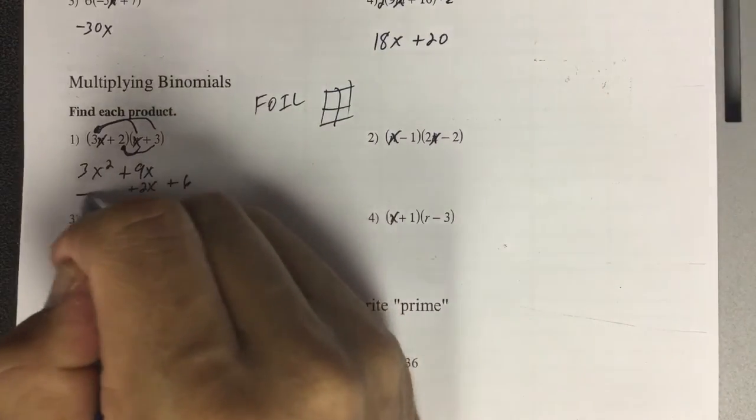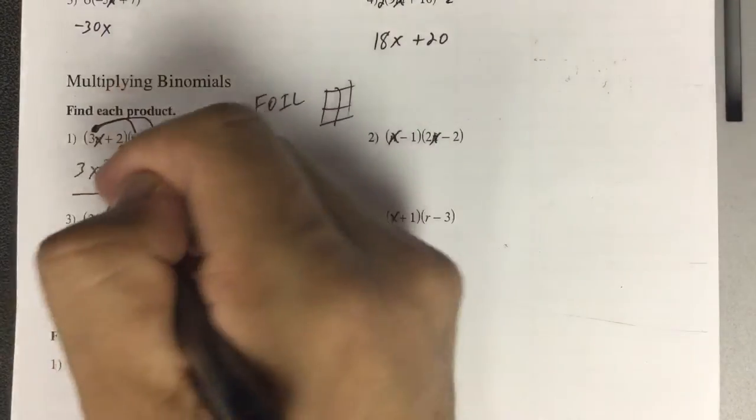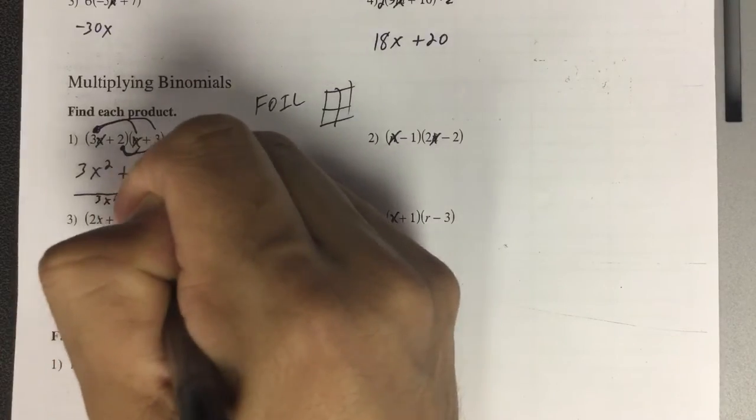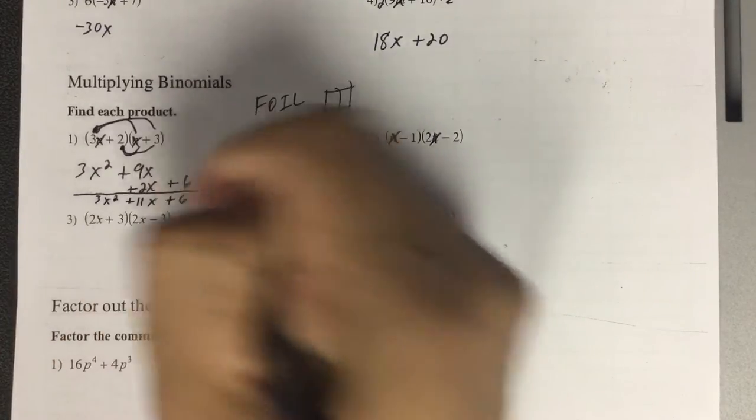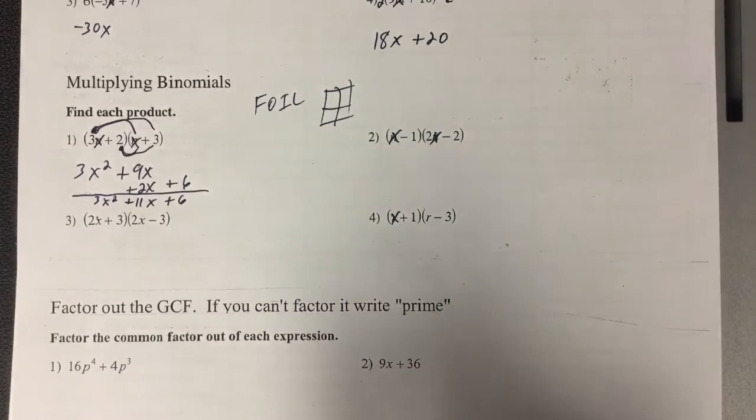So then what we're going to do is add up the terms that can go together, that have the same x. So I just got 3x squared plus 11x plus 6. And I'll write smaller so I have more space at the bottom.